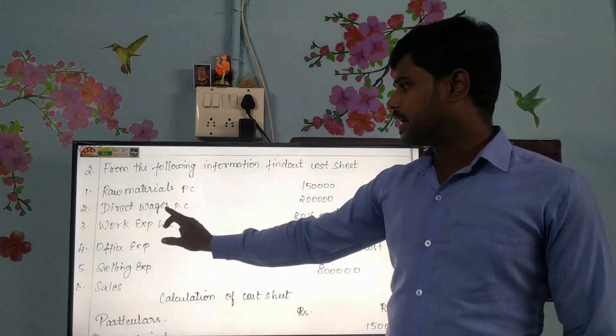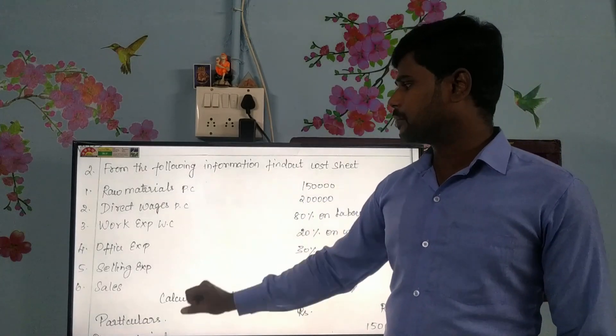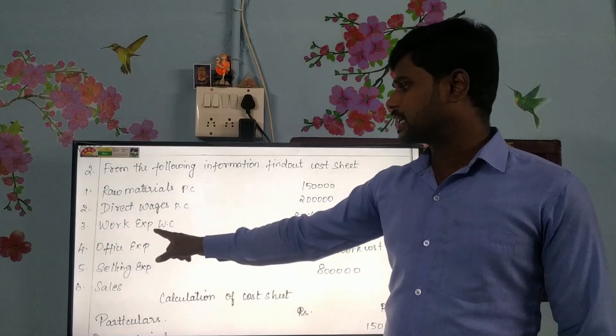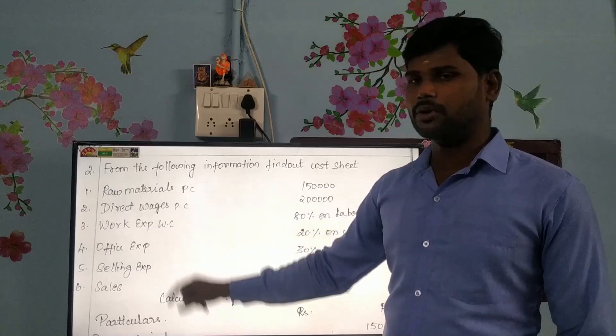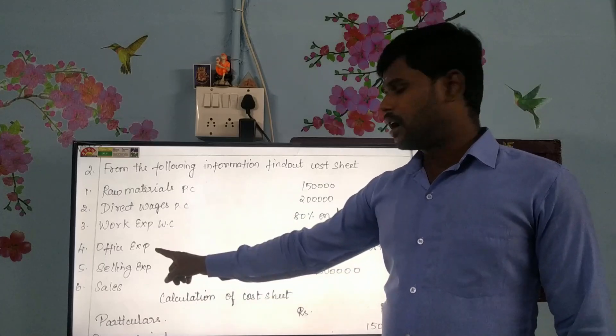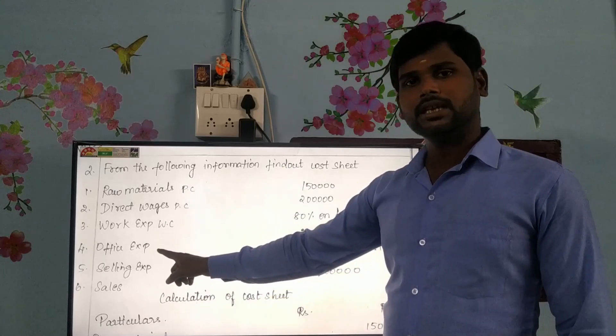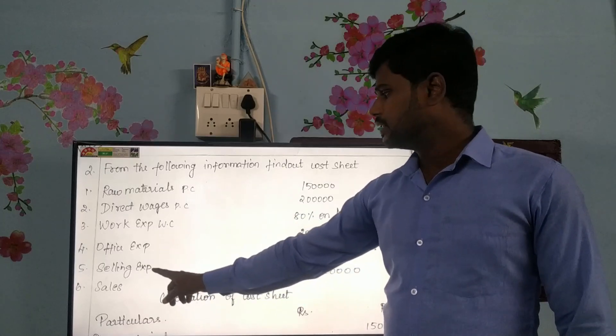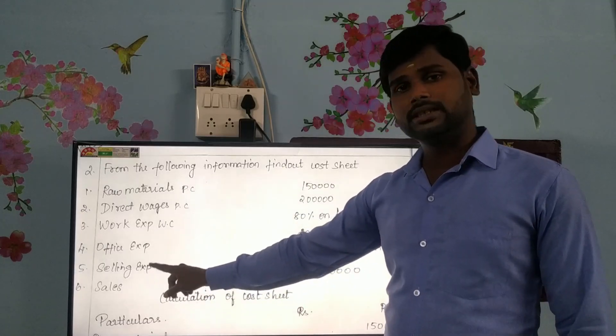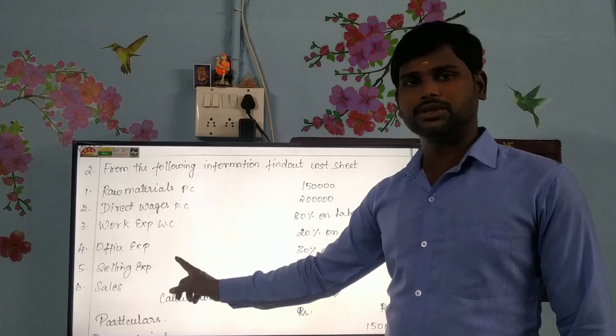The cost sheet stages are: prime cost, direct wages, prime cost total, works overhead, office overhead, office expenses, selling expenses, and selling and distribution overhead.